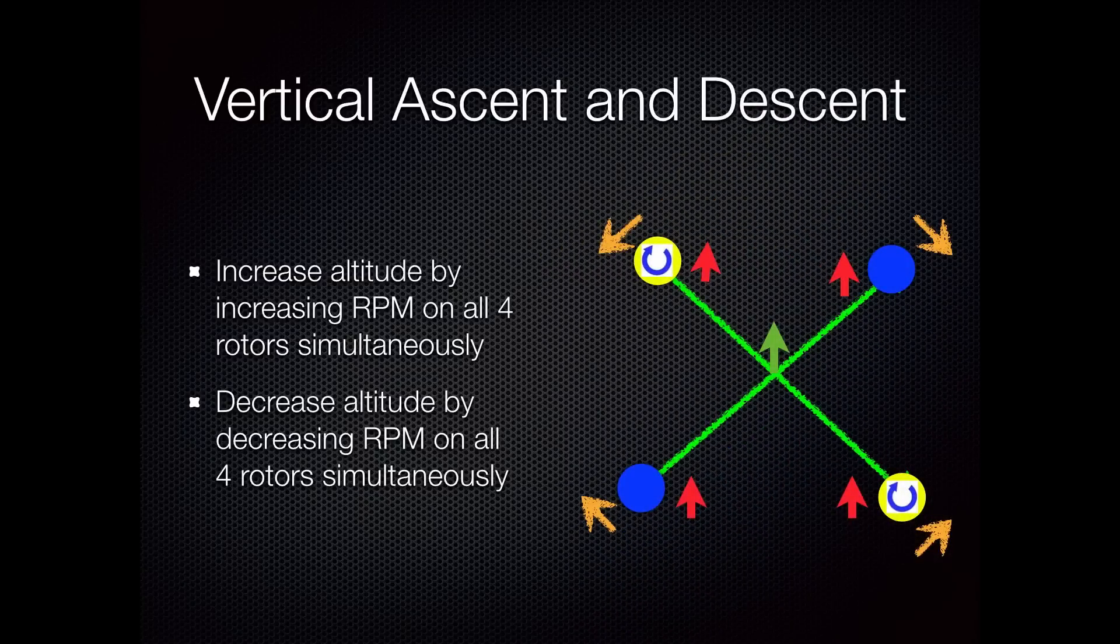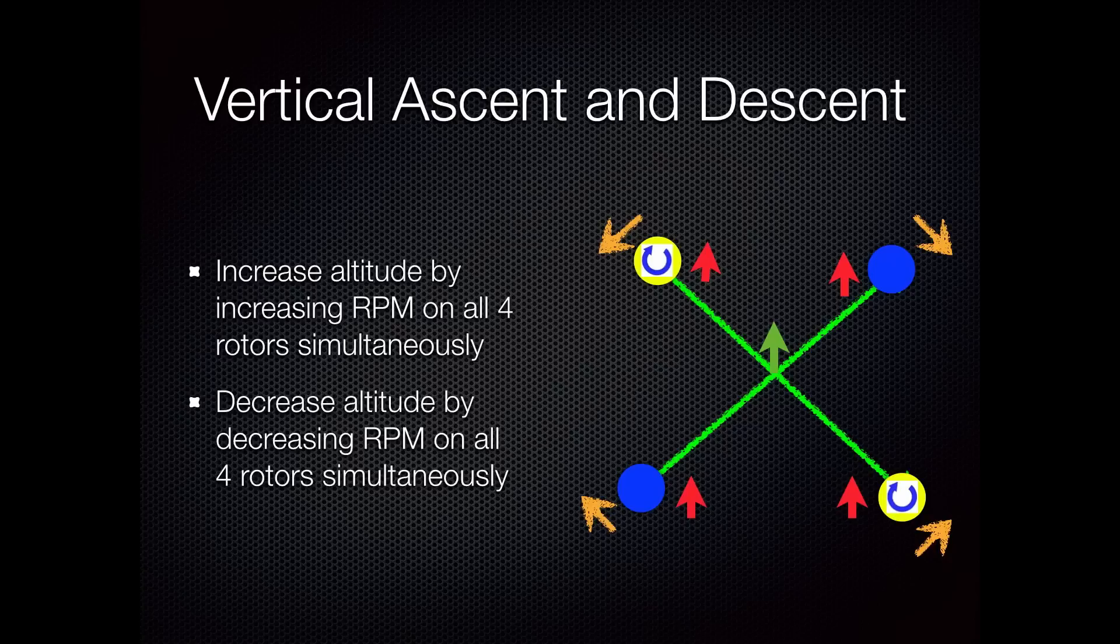If you can imagine on your Mode 2 radio control system, that would be your left stick, your throttle. Pushing the throttle up would increase the RPM, pulling it back would decrease the RPM, which would result in the quad rotor climbing or descending. Or if you get somewhere in the middle, it would end up being in a hover, as we discussed in the other slide.